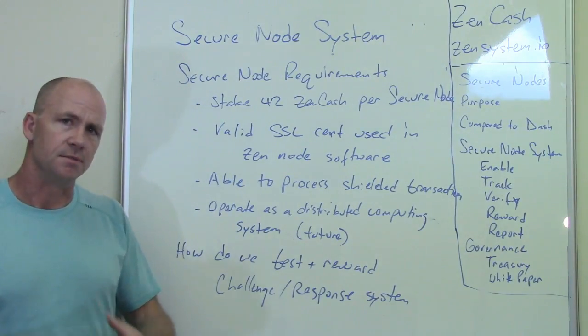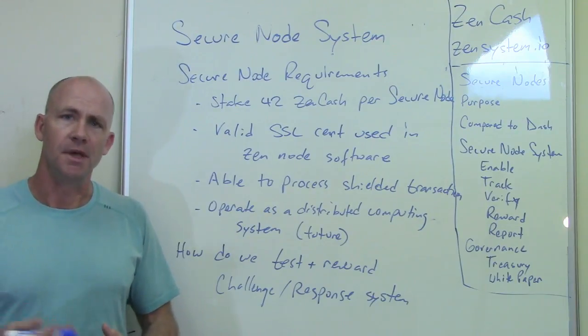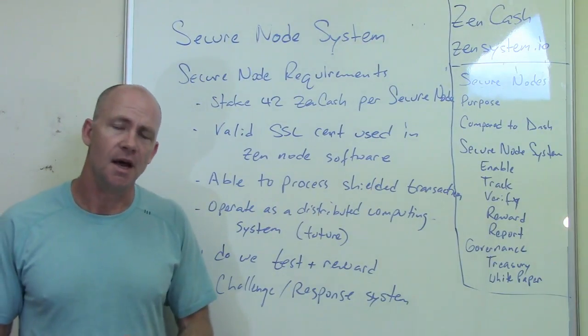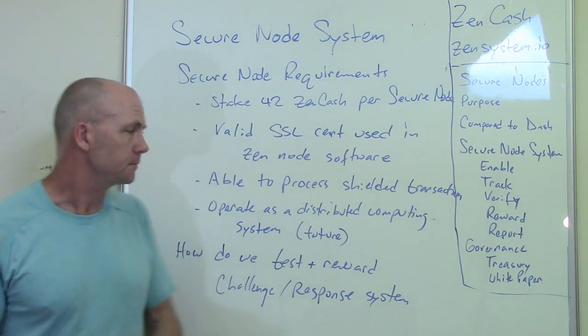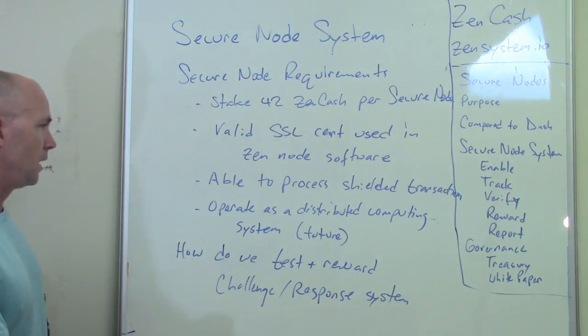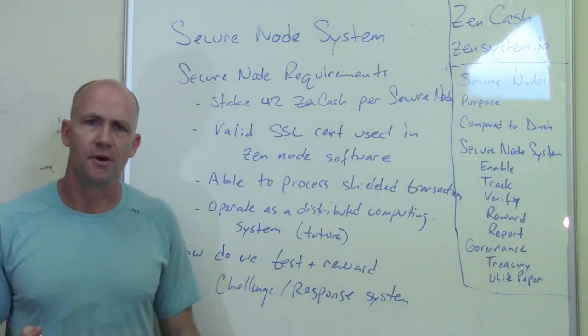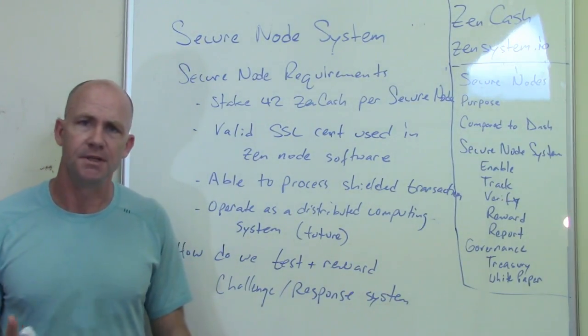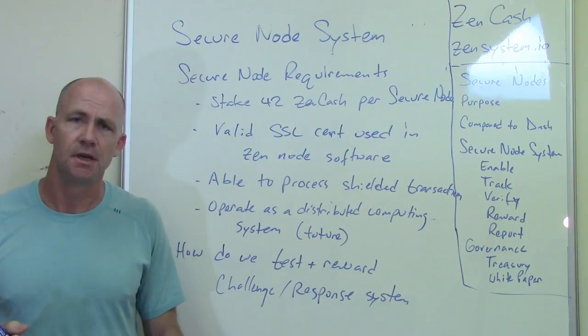By making the secure node have to be able to do a shielded transaction — which fits right in with what it's supposed to do anyway — it helps meet the computing and resiliency requirement. It's also much less likely to be hit hard by a denial-of-service attack. In the future, we want secure nodes to be able to operate as a distributed computing consensus.